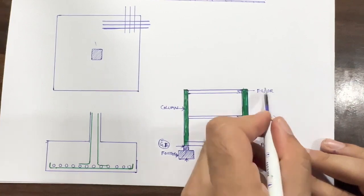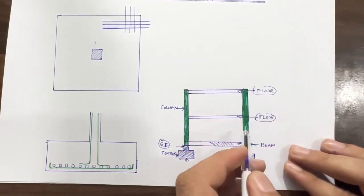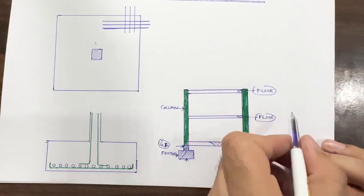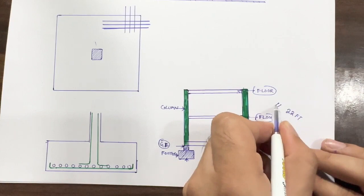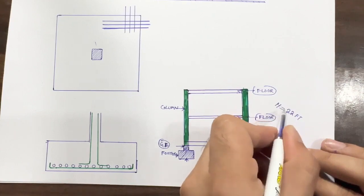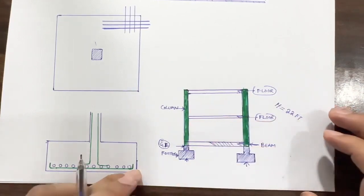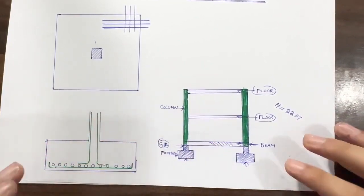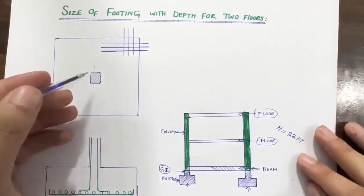You can see this is the first floor and this is the second floor. The total height from the ground to the top is 22 feet — this is the total height of the building from ground level to the top level. You can also see these two column supports within the footing.